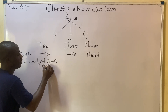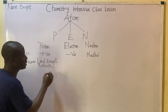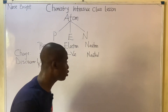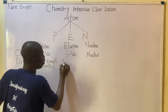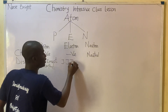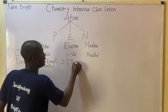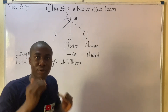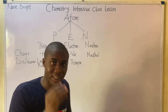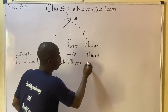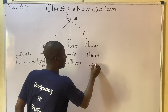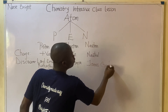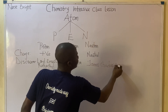Electrons were discovered by a scientist called J.J. Thomson. And lastly, neutrons were discovered by a man called James Chadwick. These were the scientists that discovered these subatomic particles.